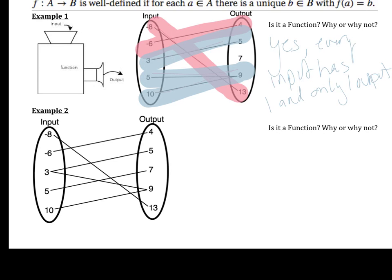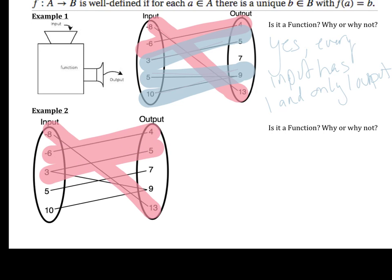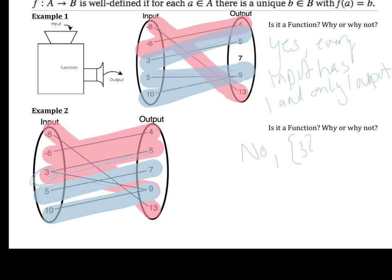Let's look at this second example. We ask the same two criteria. Negative eight has an output, negative six has an output, three has two outputs, five has an output, and ten has an output. Does every input have an output? Yes, everything goes somewhere. But if we look closer at three, we see it has two different outputs — and that's a problem. So no, because the value three has two outputs.